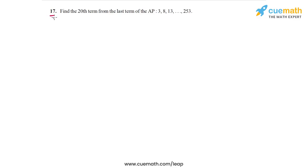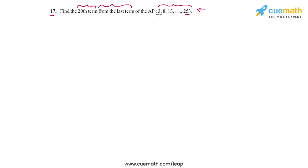Question 17 of this exercise is an interesting question. We have to find the 20th term from the last term of the AP 3, 8, 13... all the way up to 253. What this means is that if you looked at the AP from the end towards the start — from 253 going up to 3 — what would be the 20th term from this end?